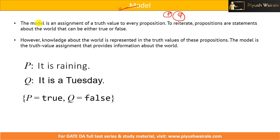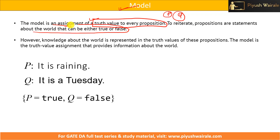What is a model? A model is an assignment of truth values to every proposition. The model will assign a truth value — either true or false — to every proposition. As a human being, I know what is true or false, but how will AI get to know? This is based on the model — the model will assign a truth value to every proposition, either true or false.